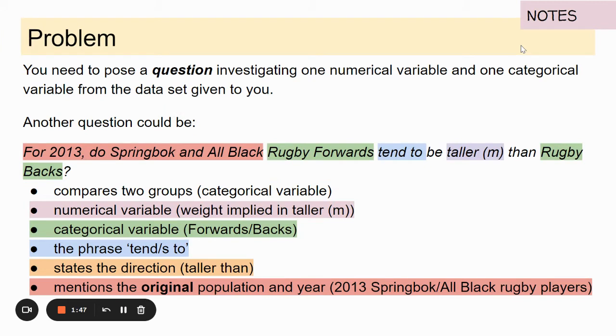So for 2013 do Springbok and All Black rugby forwards tend to be taller than rugby backs? This is the question we'll be using at our school. It's got the numerical variable, the weight implied by taller in metres. It's got the categorical variable which is the forwards and the backs. Has that 'tends to' or 'tend to be taller' and states the direction.